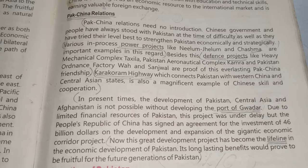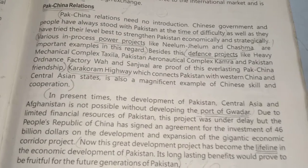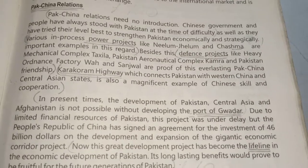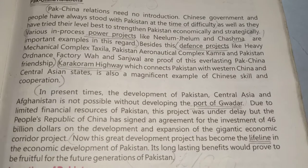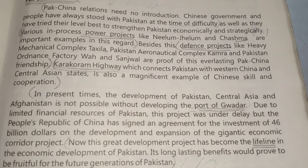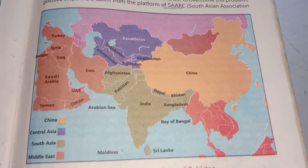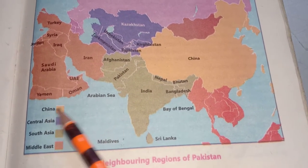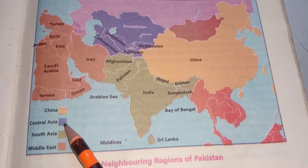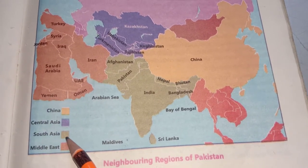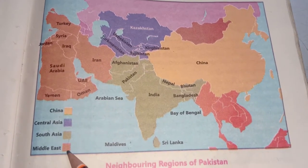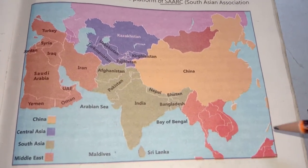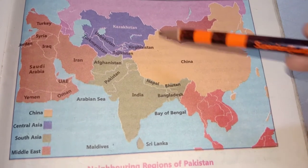The first long question is: discuss Pak-China relations. Its answer is given on page number 67. Before I discuss the Pak-China relations, I want to show the map of the neighboring regions of Pakistan. Here is the map. Light orange color shows China, and the purple color shows Central Asia. This light brown color shows South Asia, and peach color shows Middle East.